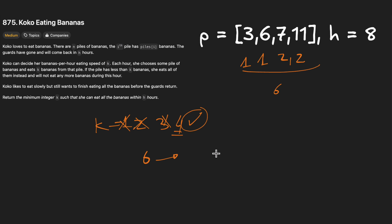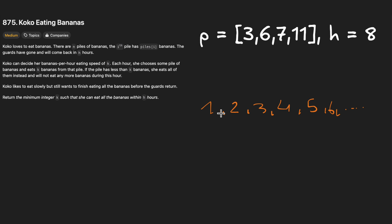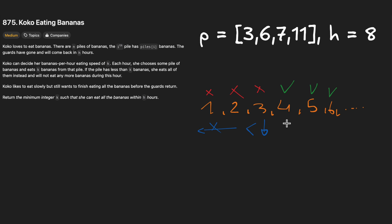So we checked k from one to six: k=1, 2, 3 all fail; k=4, 5, 6 all succeed. Can you spot a pattern? All values less than four cannot finish all piles in time, and all values four and above can. This reveals a binary search pattern — there's a clear threshold between invalid and valid values.